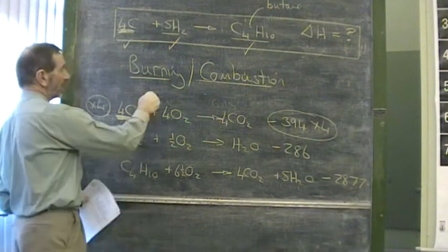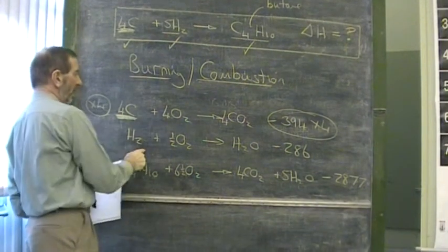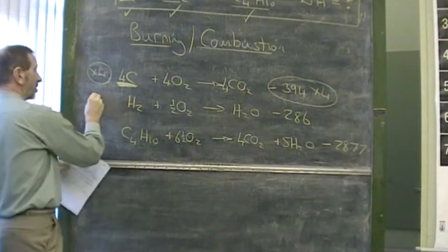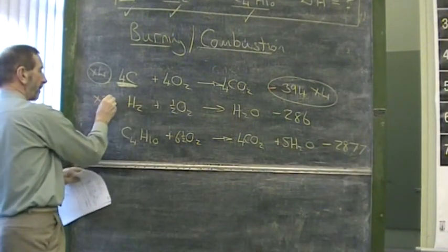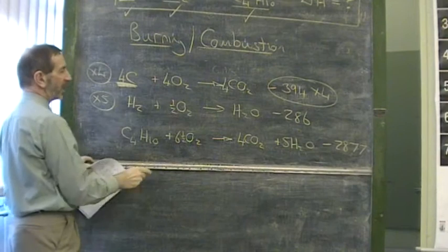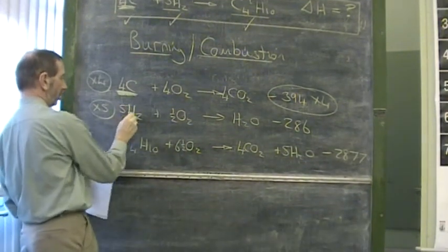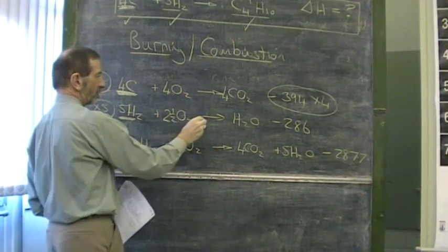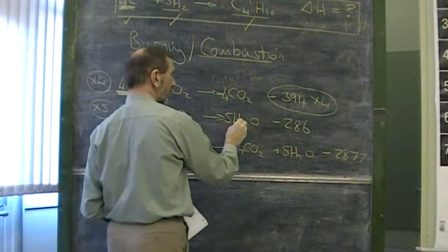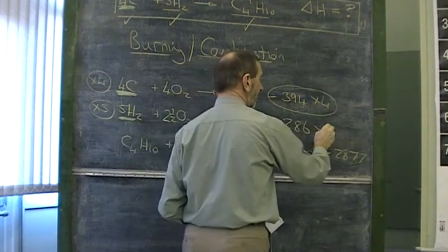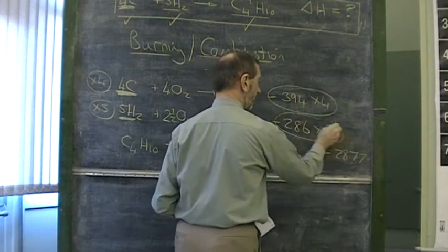Let's do the same here. Let's turn the hydrogen into 5 hydrogens. Well, obviously to produce 5 hydrogens, I'll need to multiply by 5. If I multiply this equation by 5, I can create these 5 hydrogens. It will also create 2.5 oxygens, 5 waters. But most importantly of all, the enthalpy change is multiplied by 5.